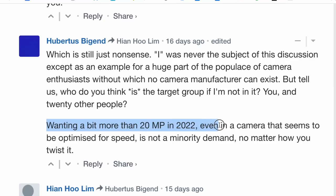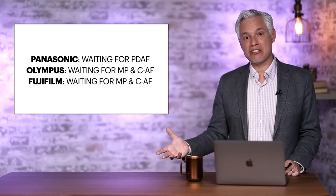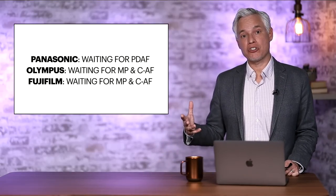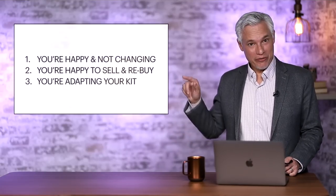Olympus users have been super excited for that OM1 to launch, but it's still launched with a 20 megapixel sensor. Fujifilm users have the same concerns. They still don't have a high megapixel camera, nor do they have autofocus tracking that can really keep up with the big three.